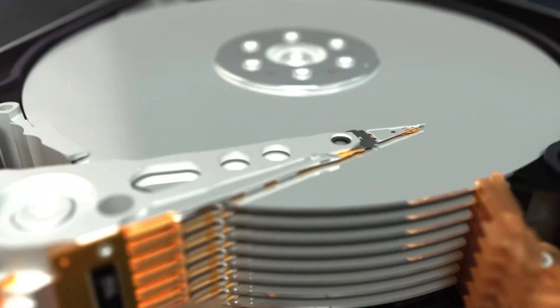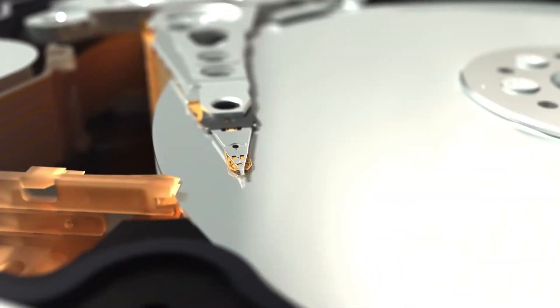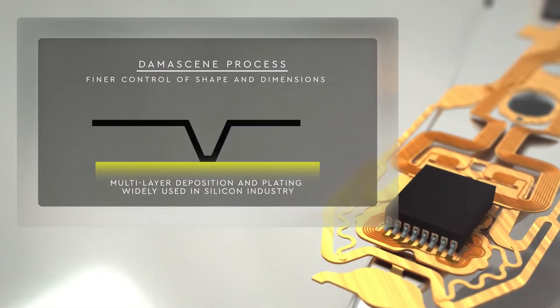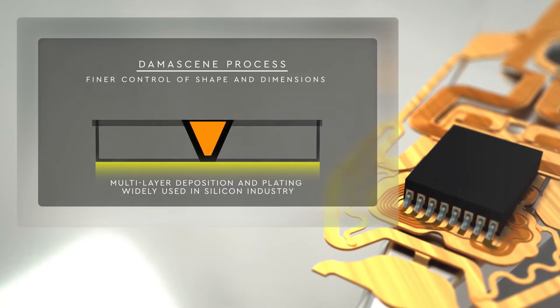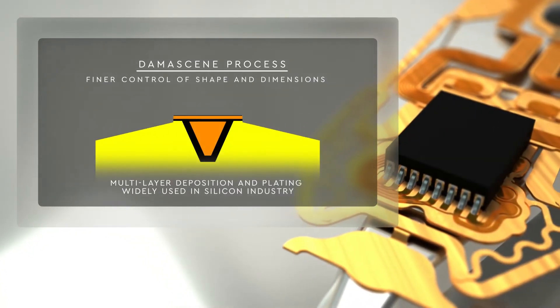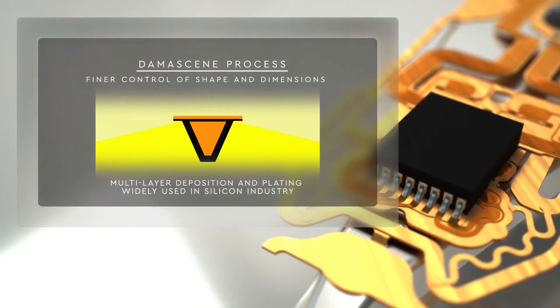In the Damascene head, the main pole and the structures of the write head are built by depositing and etching magnetic and non-magnetic materials. The Damascene process provides the ability to create smaller, more complex head structures.